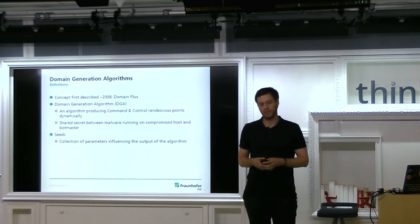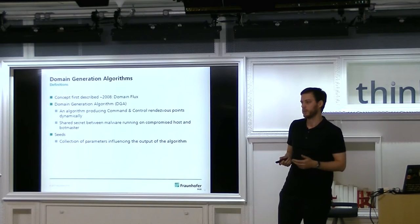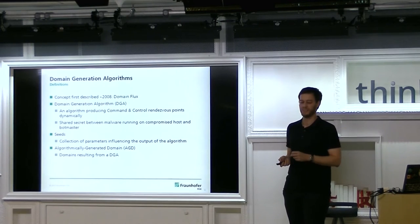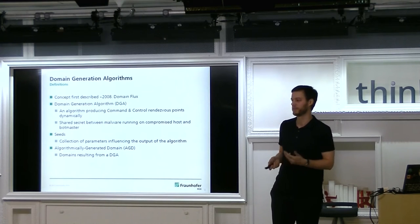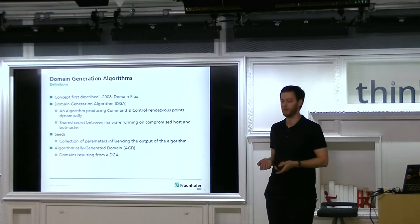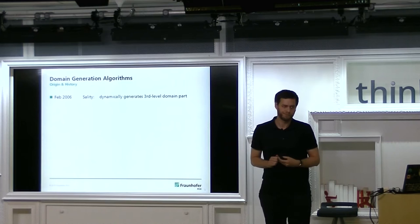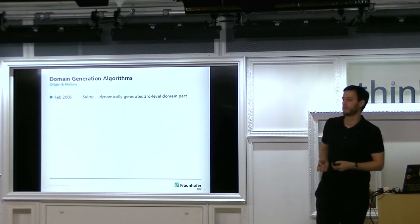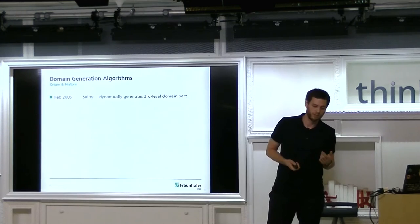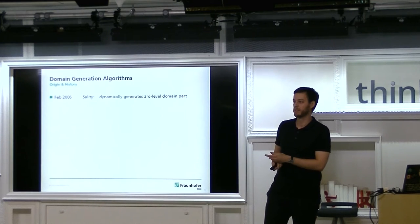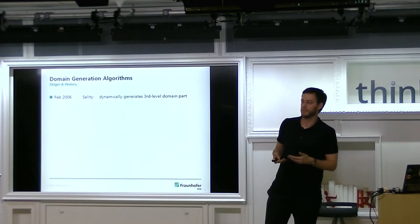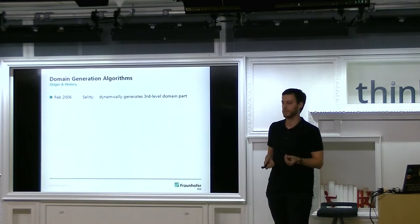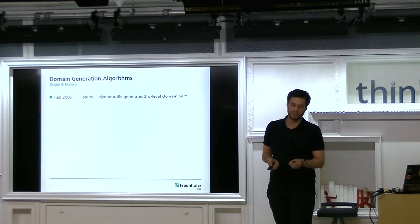Seeds are generally a collection of parameters used to influence the algorithm to produce a certain set of domains. Occasionally I'll use the term algorithmically generated domain, or AGD — domains that come out of a DGA. What was the first DGA? Looking at a lot of material, I found one variant of Sality that did something you could call domain generation back in 2006. In February 2006, this variant uses hard-coded second-level and top-level domains but generates a third-level domain. This is already an algorithm that modifies domains, but since it's not used for actual CNC contact, I wouldn't call it the first instance of a DGA.